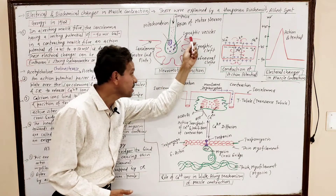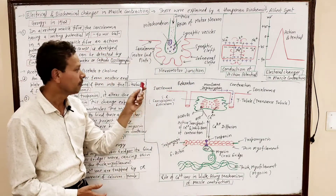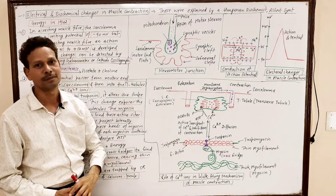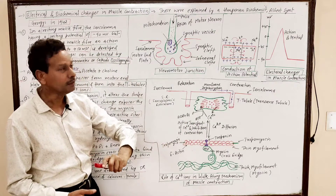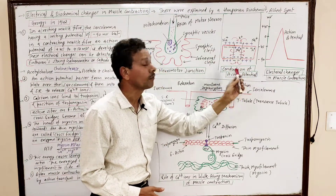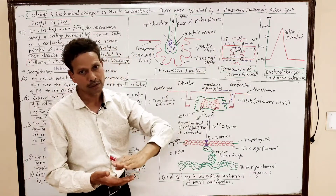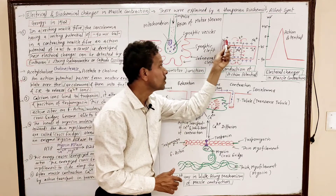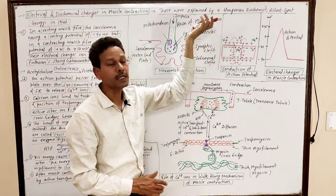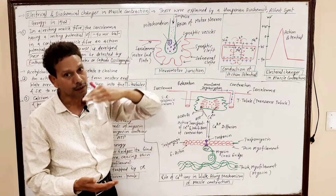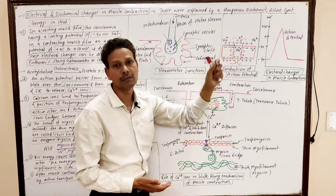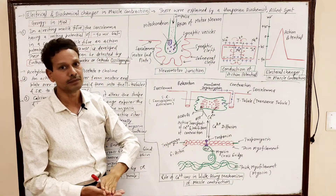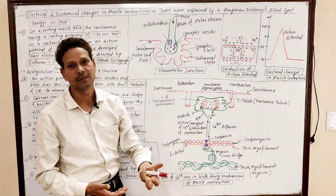This stimulates the post-synaptic membrane — the sarcolemma. This is the diagram showing conduction of action potential. In resting conditions, when a muscle fiber is at rest, sodium ions with positive charge are present outside the sarcolemma, while negative charge is present inside the sarcoplasm. A potential gradient develops on the sarcolemma.